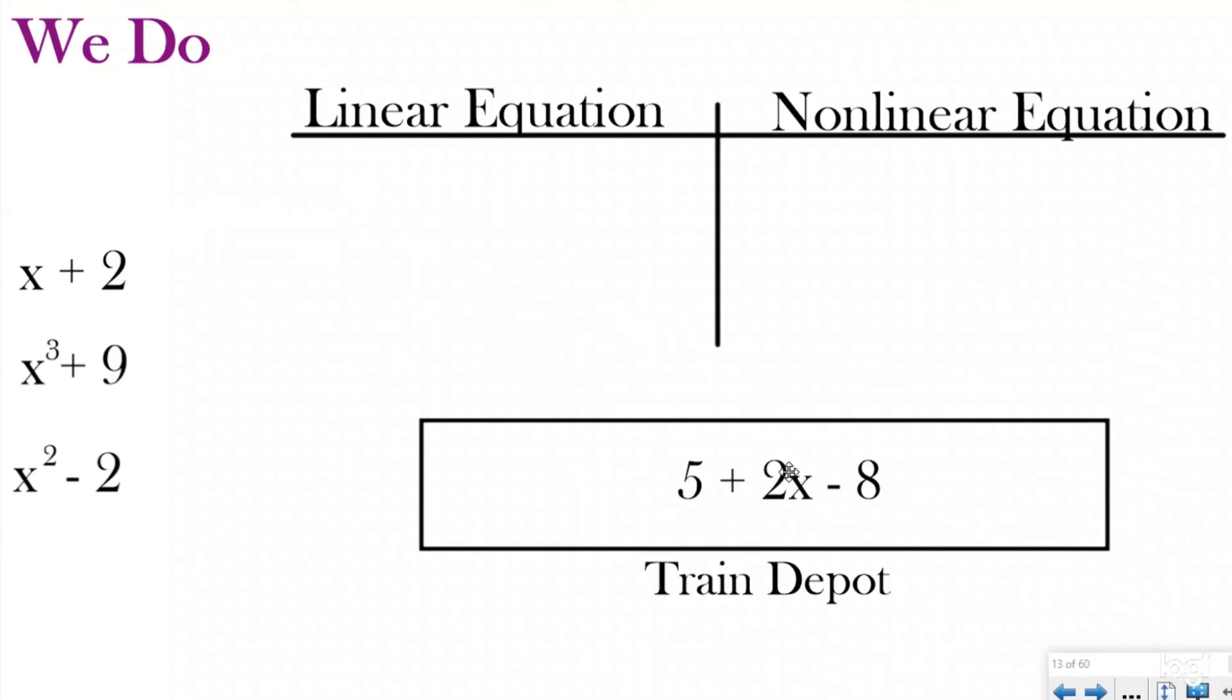The first one going to our train depot is 5 + 2x - 8. I have two constants and a coefficient variable, which makes three different terms. None of them are raised to a power greater than 1, which makes this a linear expression or linear equation.